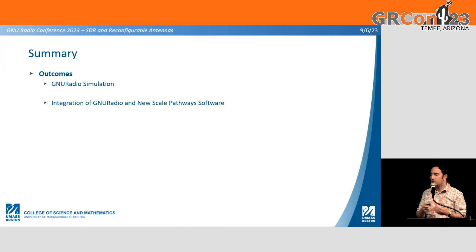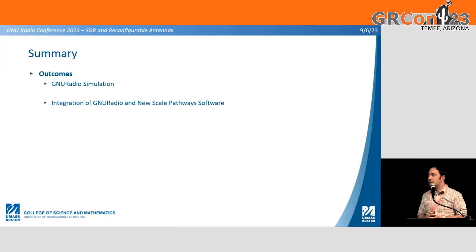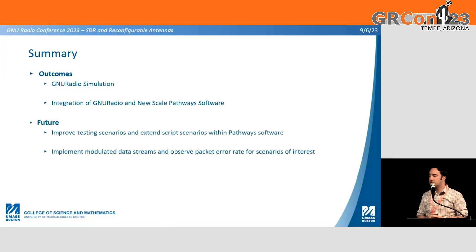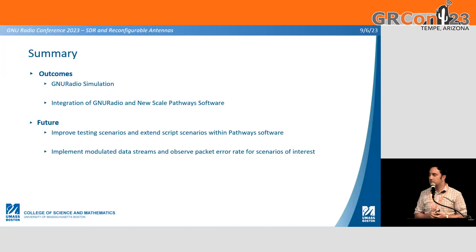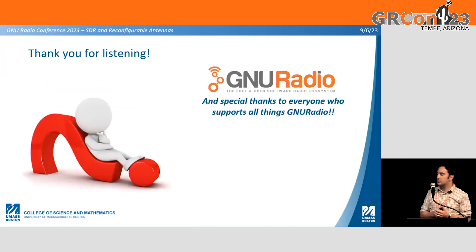Main outcomes from this work so far: early-stage collaboration bringing these two groups together, starting with GNU Radio simulation to demonstrate what we wanted to work with, and integrating GNU Radio with New Scale Pathways software to get the combined configuration of the front-end antenna and signal processing characteristics. Where we're going: improving test scenarios, extending Pathways script scenarios, implementing modulated data stream work we've done with the optical wireless setup into their system, and ultimately looking at how packet rate and other higher-level performance measurements show up in the system. Thank you so much, and thanks to all the GNU Radio folks for organizing this conference.